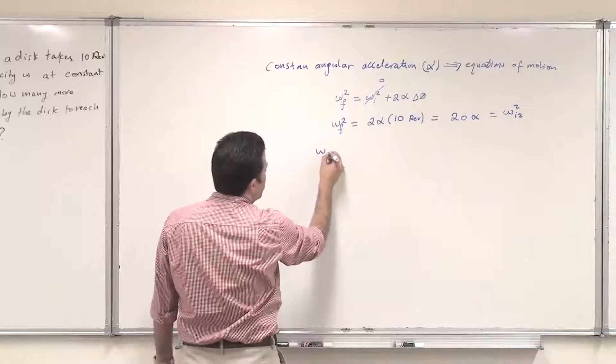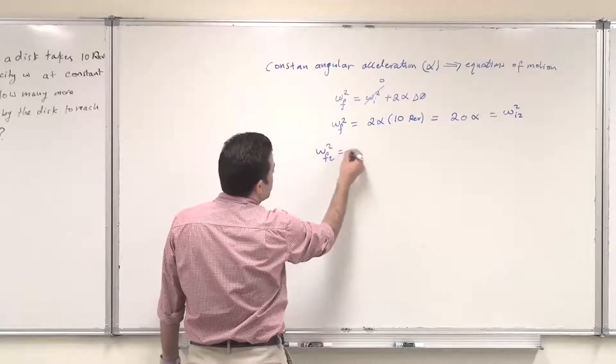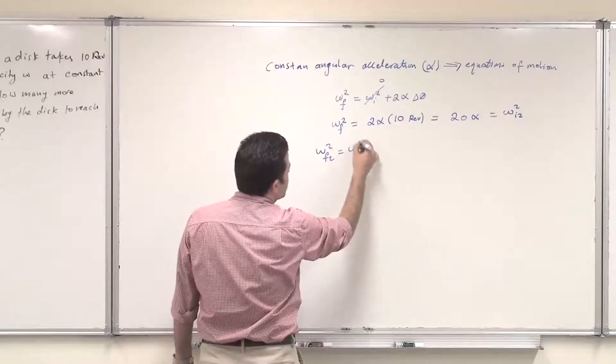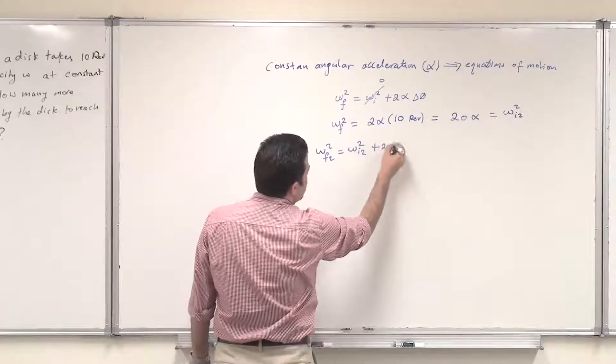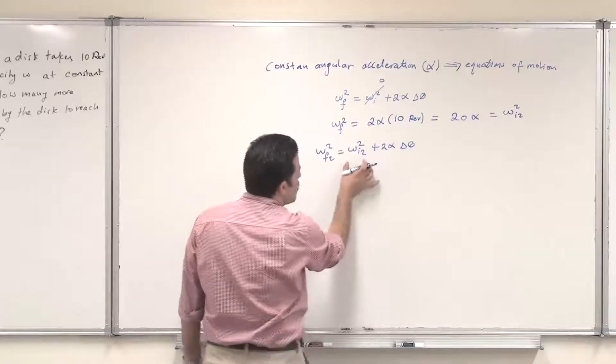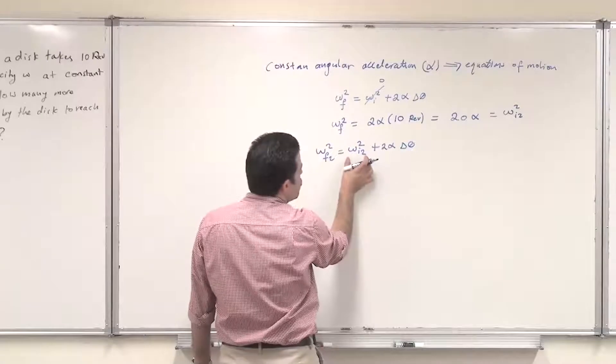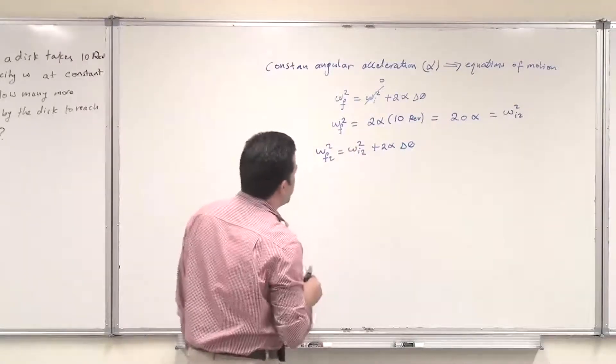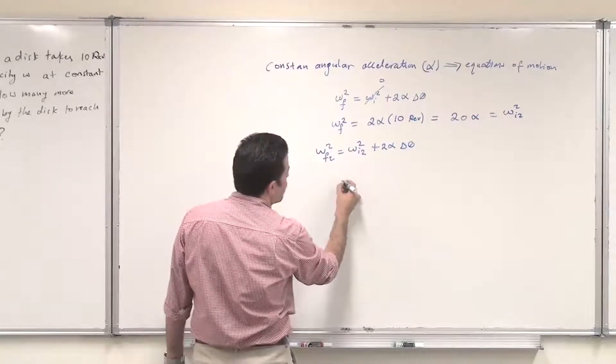Omega final 2 squared will be omega initial 2 squared plus 2 alpha delta theta. We'll use omega initial stage 2 as omega final 1. Now we can substitute.